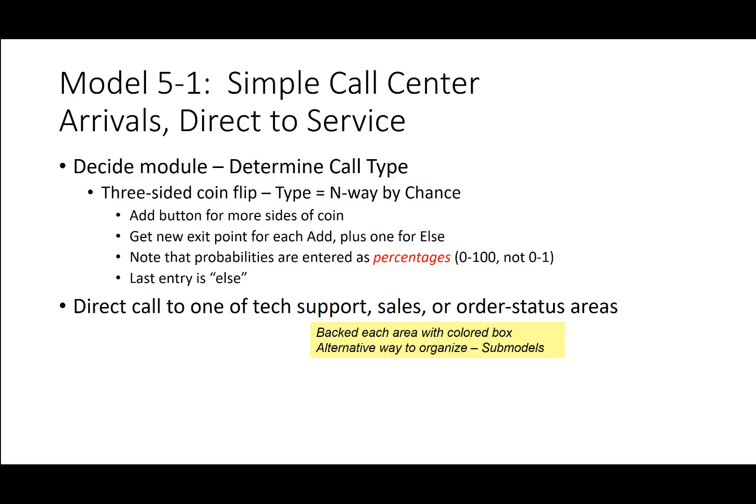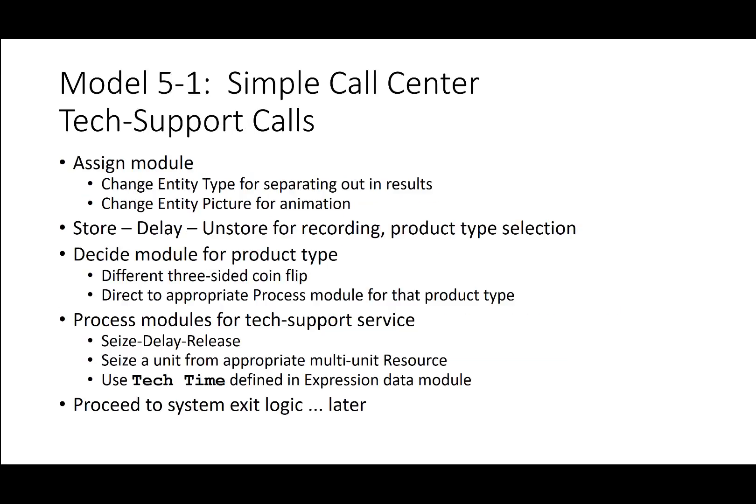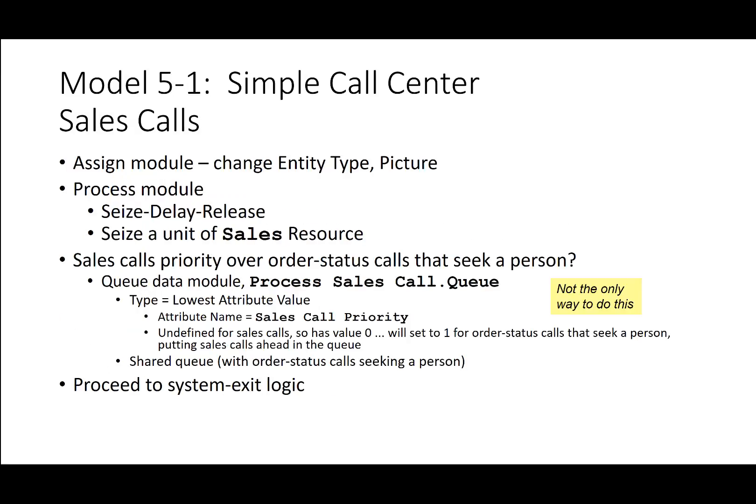The assign module changes the entity type for separating results, changes the entity picture for animation, and then store, delay, and unstore modules handle recording of product type selection. A decide module for product type performs a three-sided coin flip and directs to the appropriate process module. Process modules for tech support service use seize, delay, and release. A unit is seized from the appropriate multi-unit resource, using tech time defined in the expression data module, then proceeding to system exit logic.